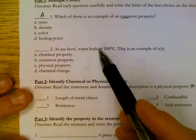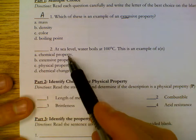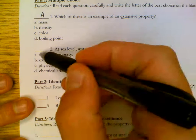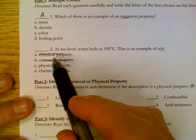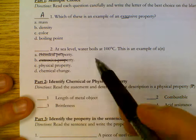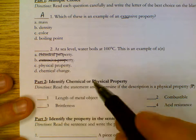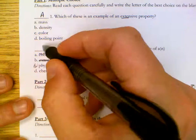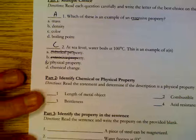At sea level, water boils at 100 degrees C. This is an example of a chemical property? No, boiling is not chemical. Extensive property? No, it doesn't matter how much water you have. If you have an ocean or a cup, it's always going to boil at 100 degrees C. Physical property, that's true. Not a chemical change because it's not making something new.